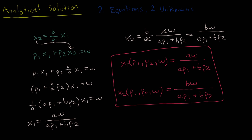The demand function for good 1 is x1 = aW / (a·p1 + b·p2), which is a function of prices p1 and p2 and the consumer's income level. The demand function for good 2 is x2 = bW / (a·p1 + b·p2), also a function of the two prices and income. If you plug in specific numbers for prices and income, these functions give you the quantity demanded for goods 1 and 2, consistent with maximizing utility subject to the budget constraint.